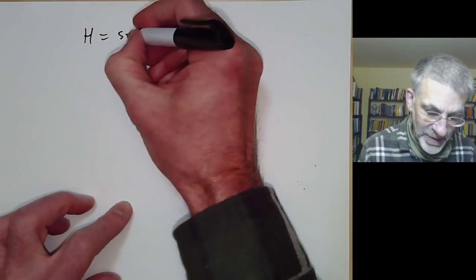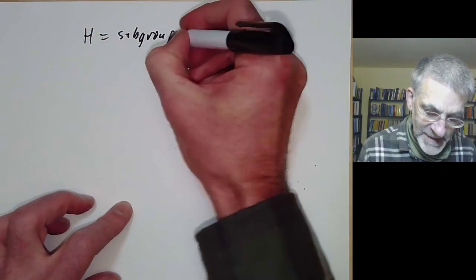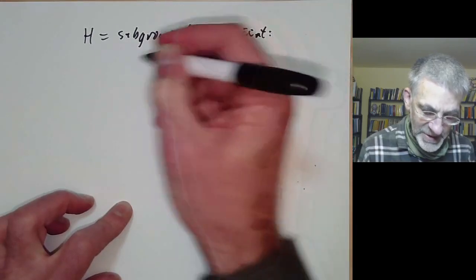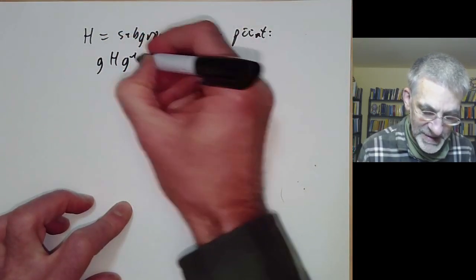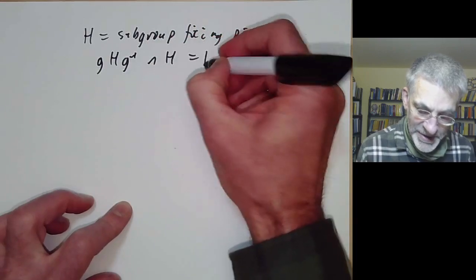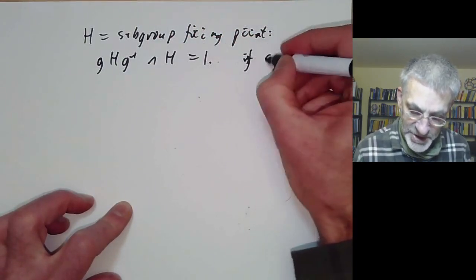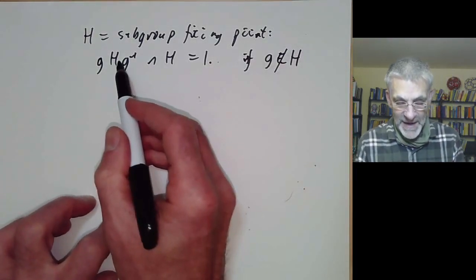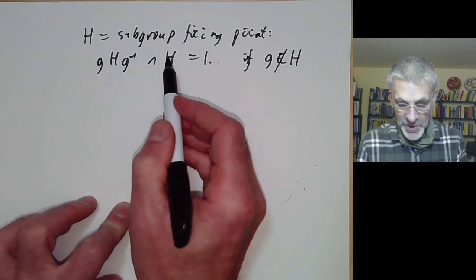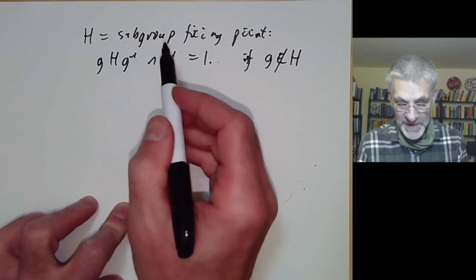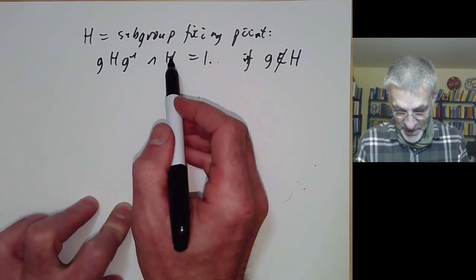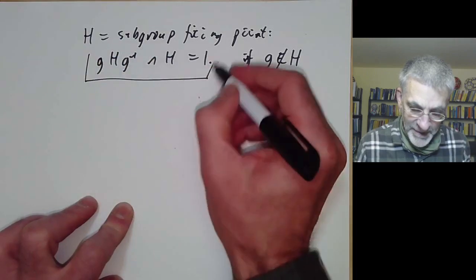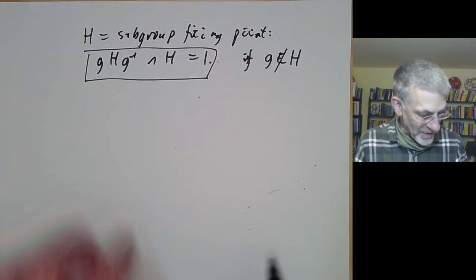If H is the subgroup fixing a point, then Frobenius groups have the following property: gHg⁻¹ ∩ H is just the identity if g is not in the subgroup H. That's because anything in these two subgroups actually fixes two points — it fixes the point fixed by H and also fixes the conjugate of that point by g. So this is more or less another way of defining a Frobenius group.